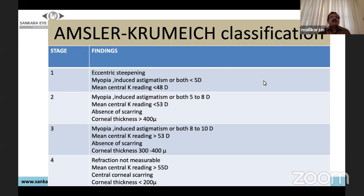The widely used classification is Amsler-Krumeich. Stage 1: myopia/astigmatism less than 5 diopters, mean central K less than 48 diopters. Stage 2: 5–8 diopters, mean K less than 53 diopters, no scarring, corneal thickness more than 400 microns. Stage 3: 8–10 diopters, mean K more than 53 diopters, no scarring, thickness 300–400 microns. Stage 4: refraction not measurable, mean K more than 55 diopters, central corneal scarring, thickness less than 200 microns.